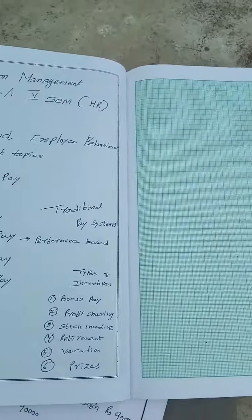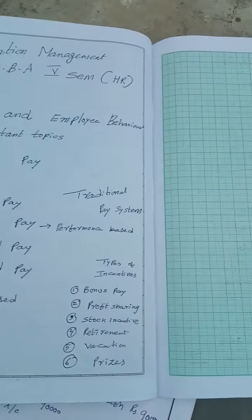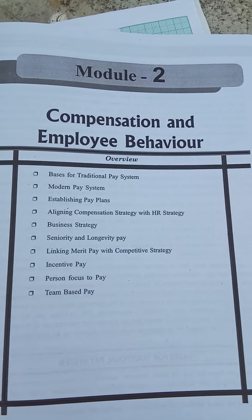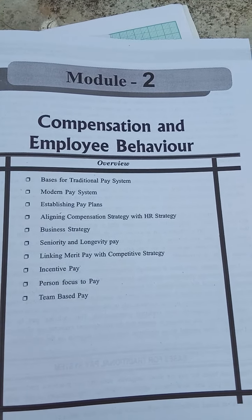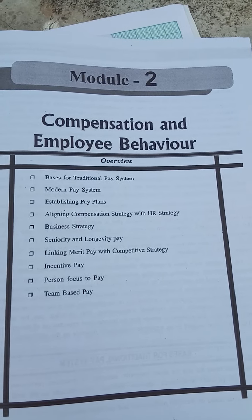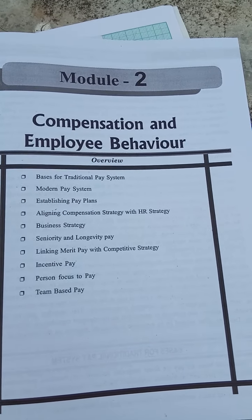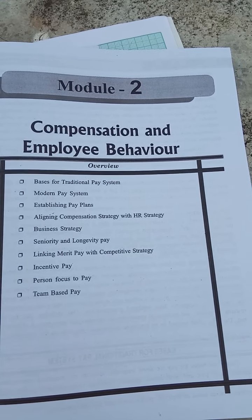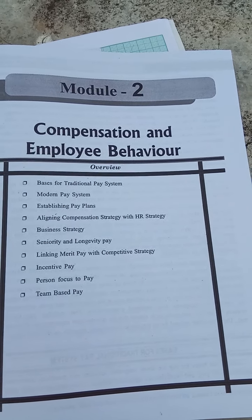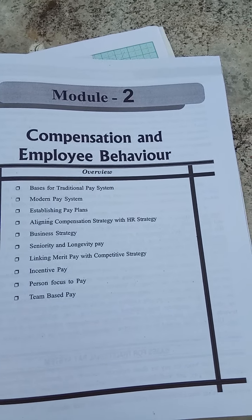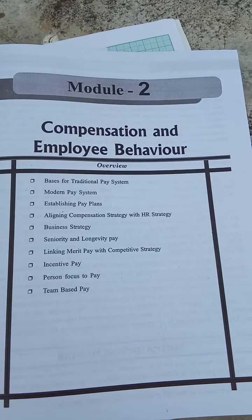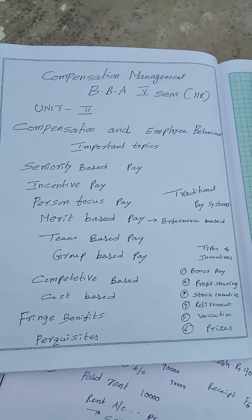In unit number two, these are the topics which we need to cover. In unit number one we have seen some topics; in unit number two, these are the topics: basis for traditional pay system, modern pay system, establishing a pay plan, aligning compensation strategy with HR strategy, business strategy, seniority and longevity pay, linking merit pay with competitive strategy, incentive pay, person-focused pay, and team-based pay.